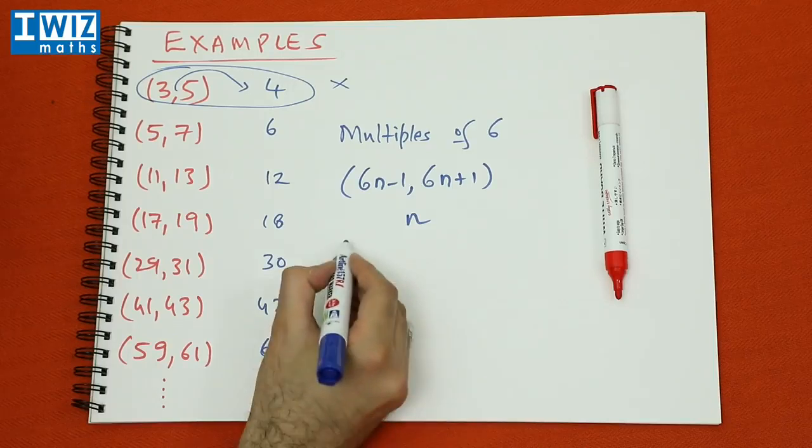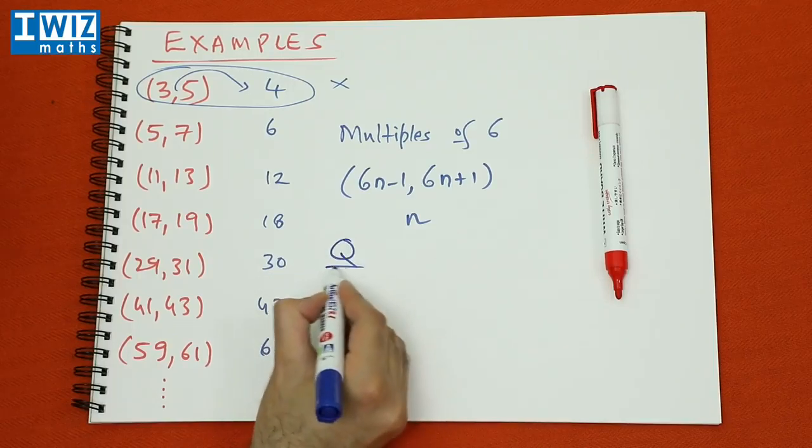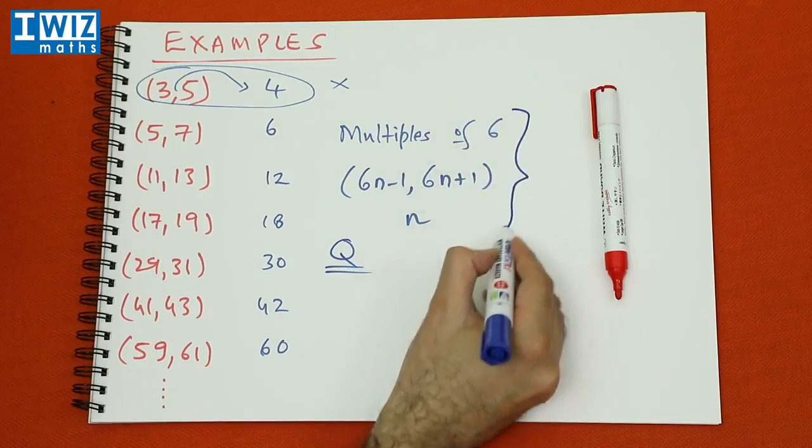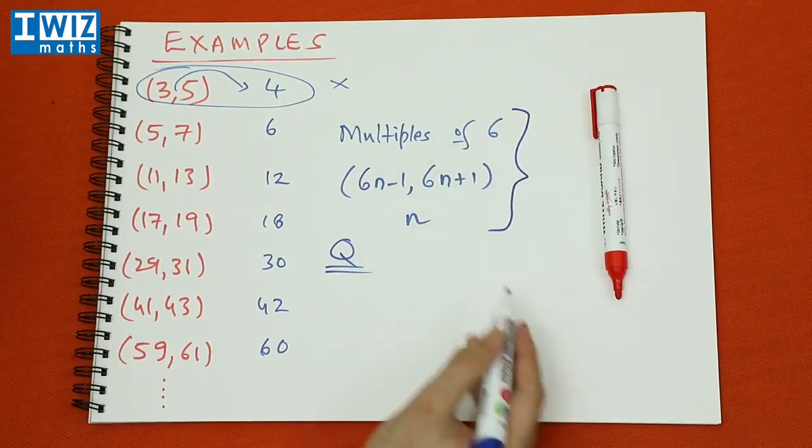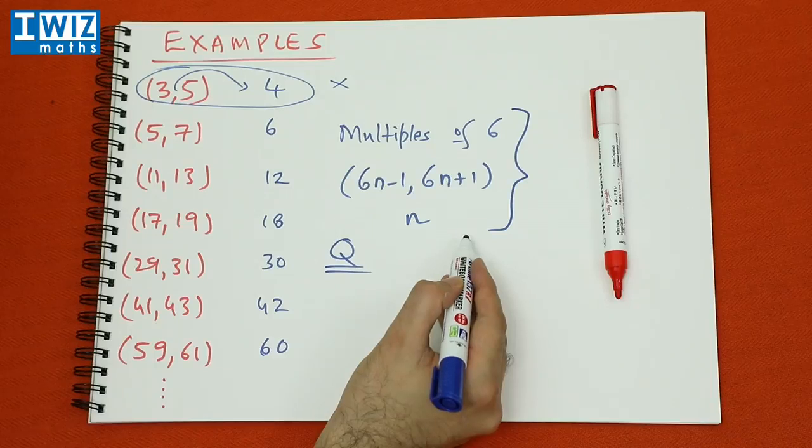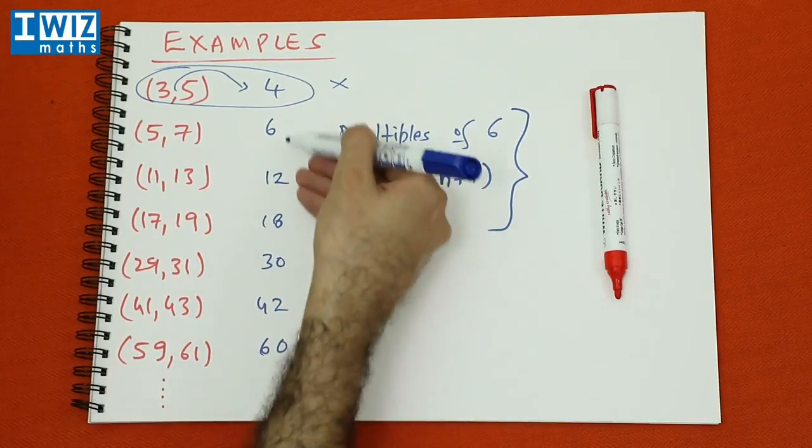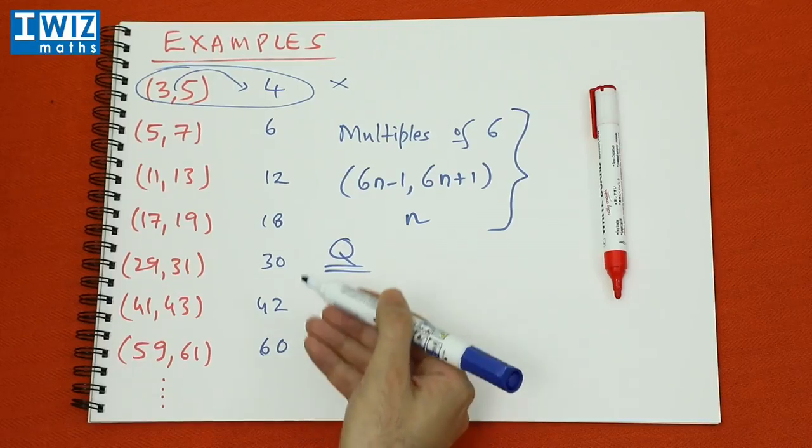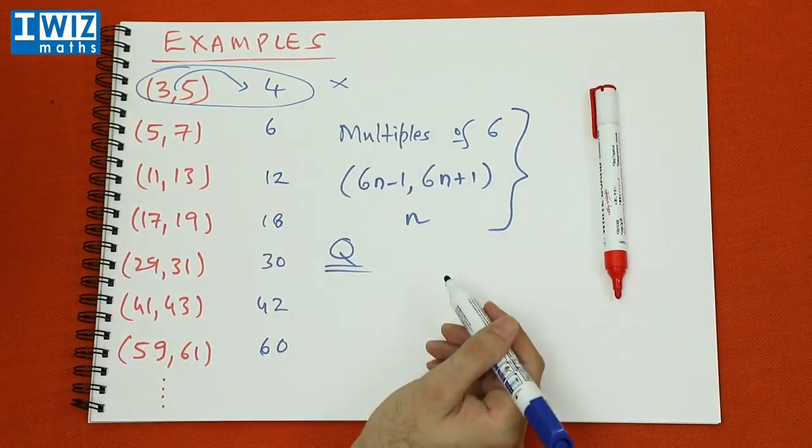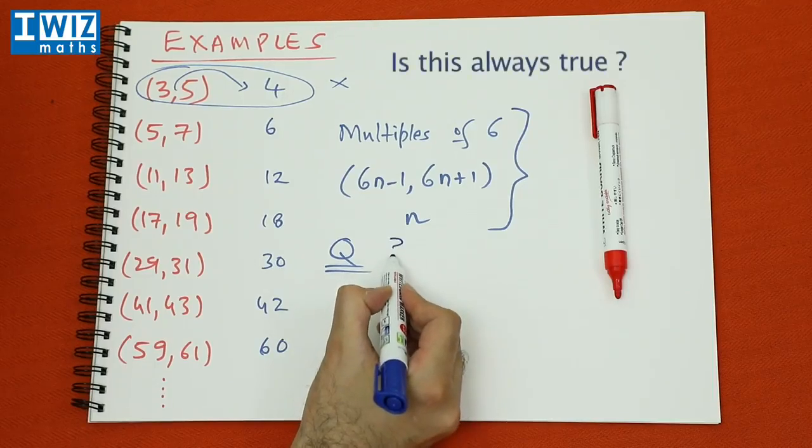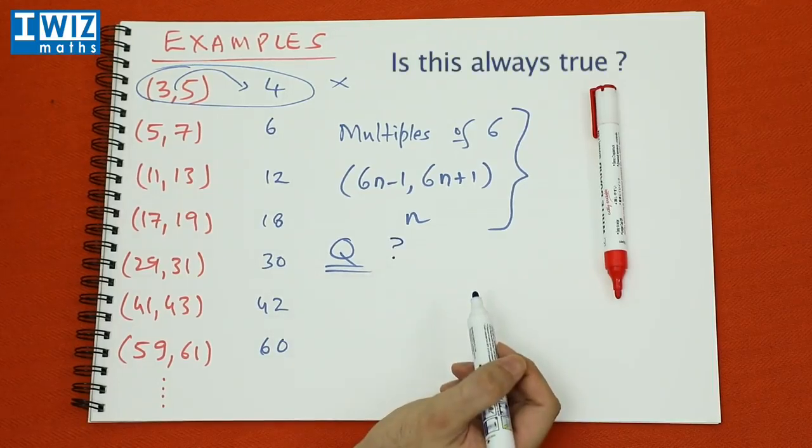So the question that we have for you is the following. Is this universally true? Is this universally true for all twin primes, or is it the case that it's only true for the first couple of twin primes apart from the very first twin prime? So that's the question we are going to ask you. Is this universally true or not?